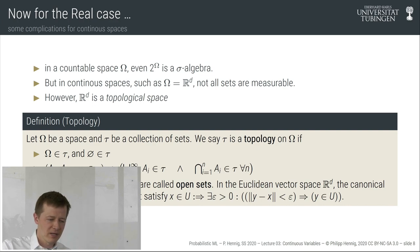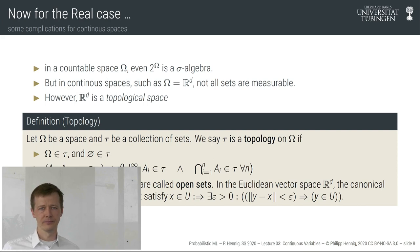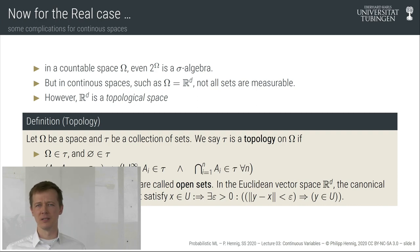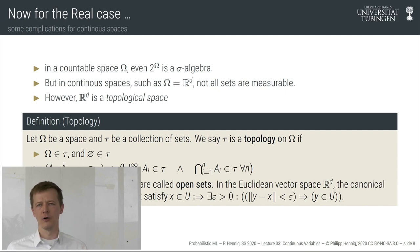This problem exists and therefore we can't define sigma algebras by using the power set on continuous spaces. Early in the 20th century these non-measurable sets caused major debate. Today we know they exist and deal with them. This doesn't mean we can't define sigma algebras on continuous spaces — it just means we can't use the canonical power set approach from discrete spaces, so we have to find another way.